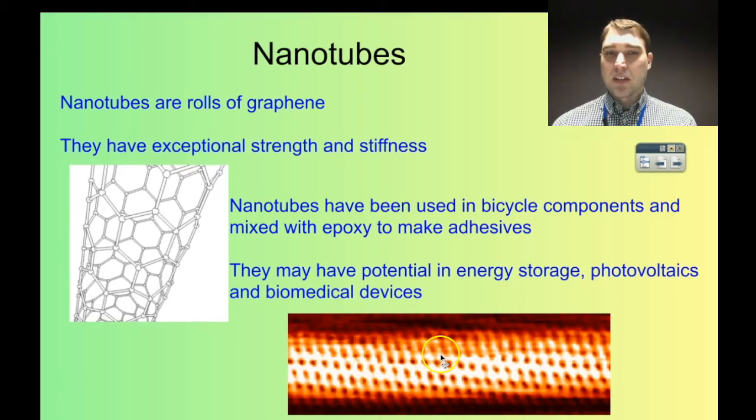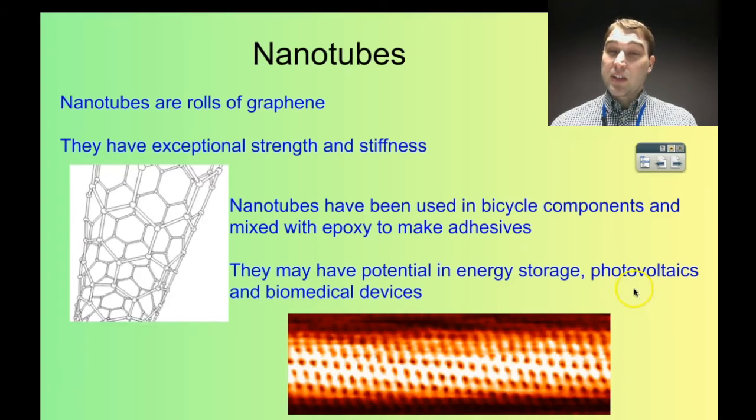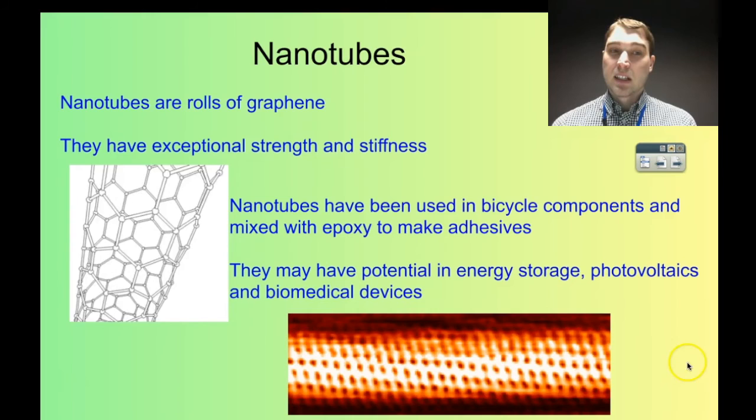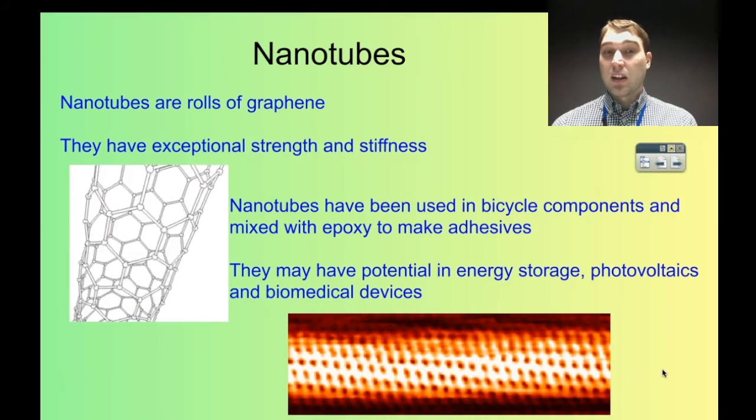There are different forms of nanotubes depending on how you join the carbons together. Other applications being investigated are energy storage — how do you store energy so it can be extracted easily and stored back again — photovoltaics (solar panels), and biomedical devices. They're looking at using nanotubes as structures to help grow cells on, so you can make things like bone or other body structures using the nanotubes as the basic matrix underneath.